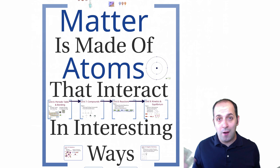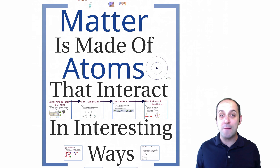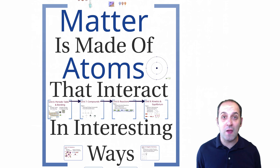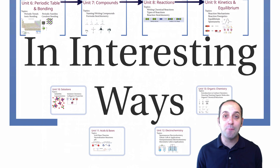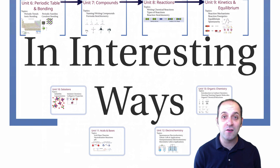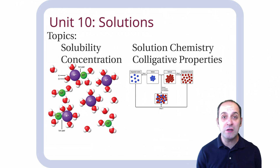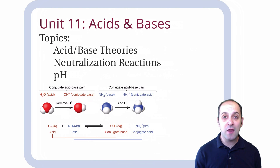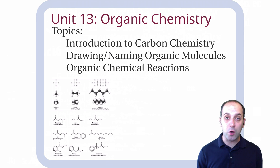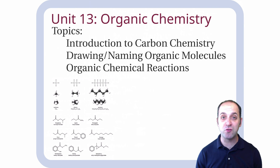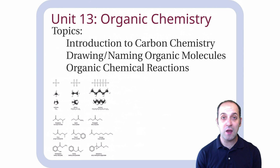Our theme for the year has been that matter is made of atoms that interact in interesting ways. In the first part we looked at collections of matter, then we looked at the atom in the second part. Then we looked at what happens when we put atoms together in the third part. Here in our last part we've been looking at four different examples of interesting ways that atoms interact. We started with solutions, then acids and bases, then electrochemistry, and here at the end we're going to do a brief introduction to organic chemistry.